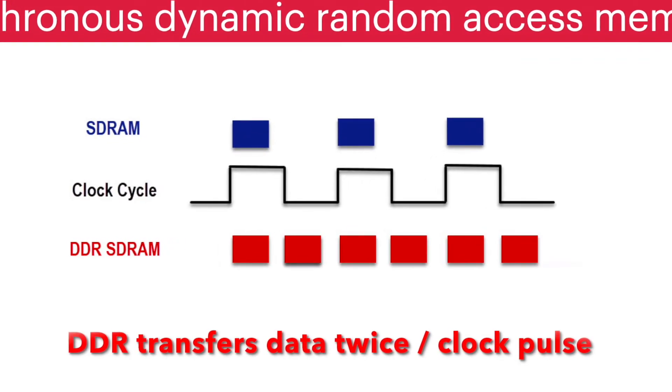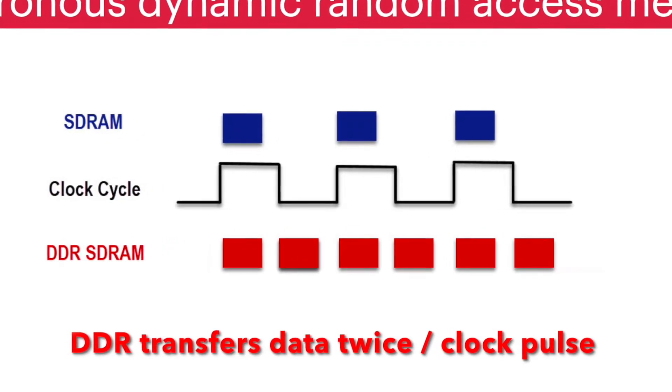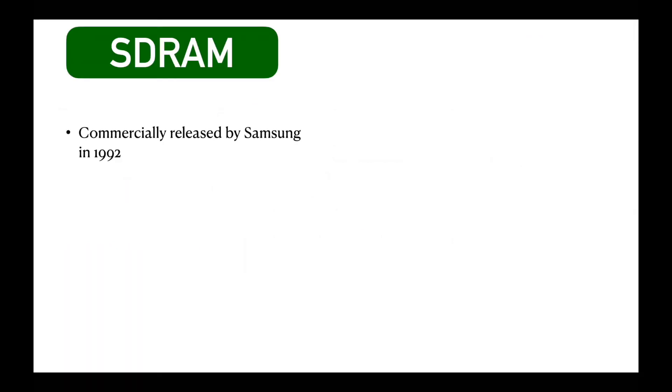DDR stands for double data rate, and this meaning you can relate with this diagram. The first commercial SDRAM was launched in market by Samsung in 1992 using CMOS fabrication process, and its size was 16 megabytes.